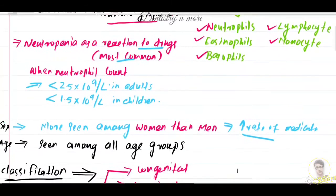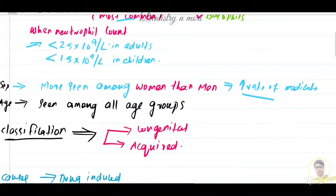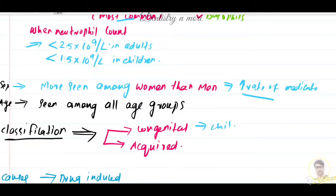Regarding age, agranulocytosis occurs in all age groups. The congenital forms are most common in childhood, whereas the acquired form is most common in the elderly population.